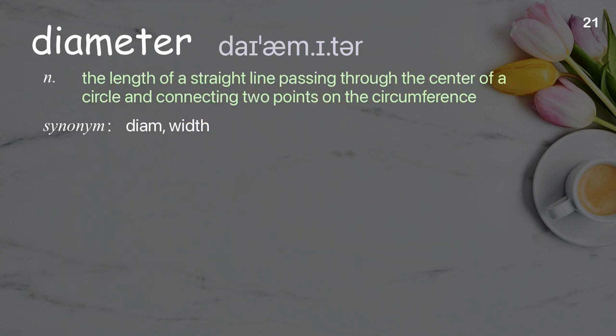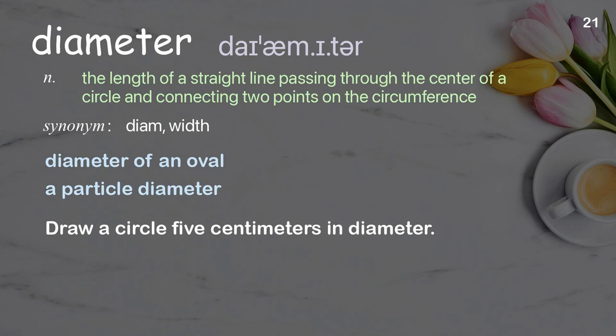Diameter: the length of a straight line passing through the center of a circle and connecting two points on the circumference. Examples: diameter of an oval, a particle diameter. Draw a circle five centimeters in diameter.